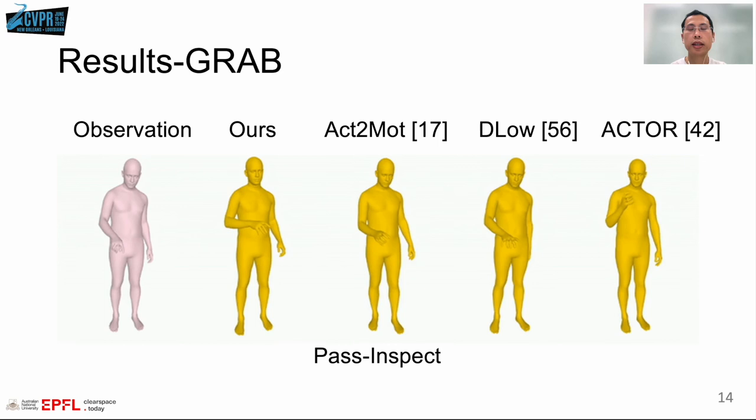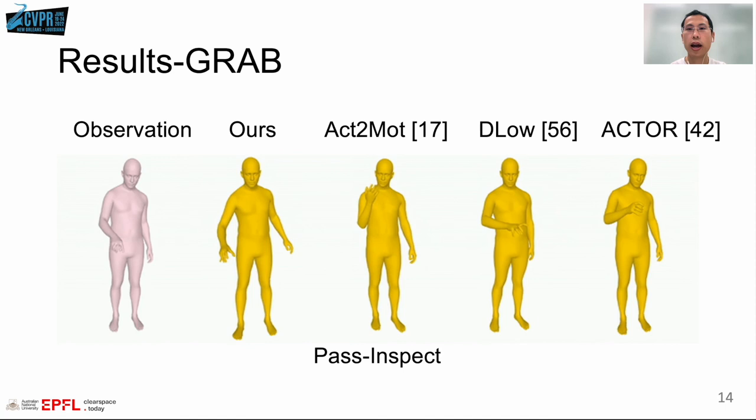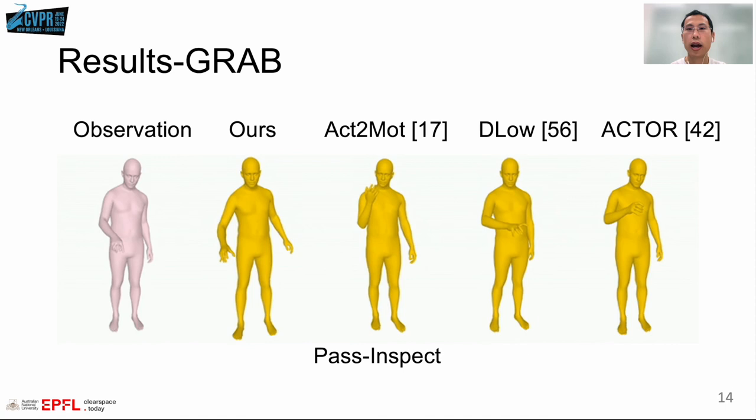We also provide qualitative comparisons on these datasets. Baseline models either produce tertiary motions, such as action to motion or ACTOR, or predict future motions that do not reflect the given action label, such as DLow.